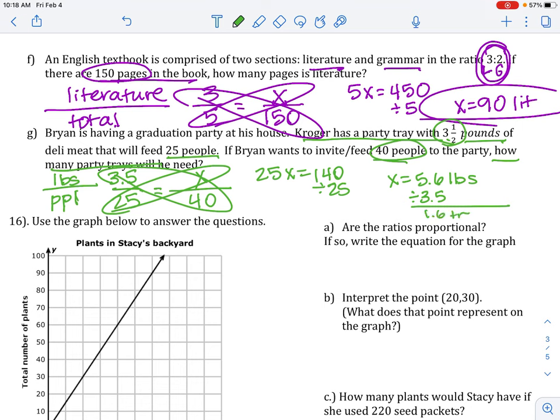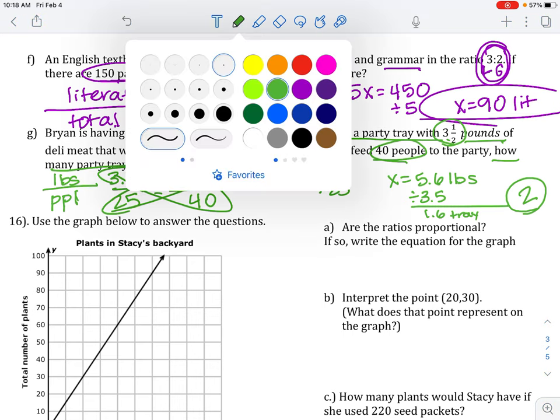So, one tray is not enough. Two trays is too much, but let's say you're a party planner. You better get two trays. You'd rather have too much than not enough. Life lesson.